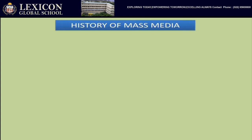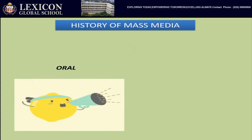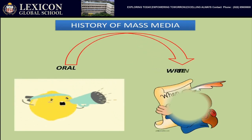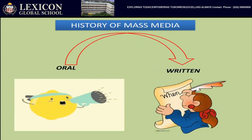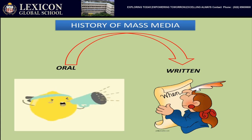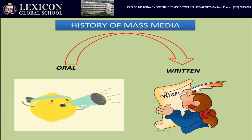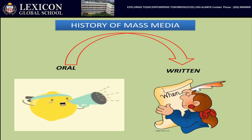We also studied about the history of Mass Media — how in the ancient times, information was passed from one person to another orally. And then with the arrival of the Britishers, printing technology was introduced in our country and information was passed with the help of newspapers.